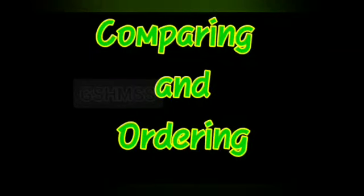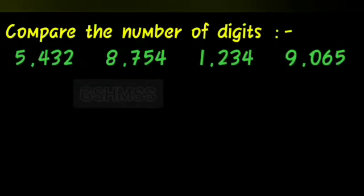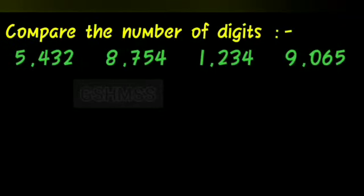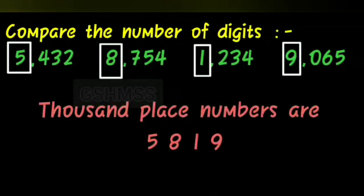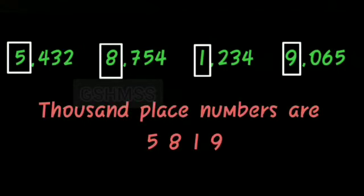Next, we are looking at comparing and ordering numbers. If you want to compare numbers, first we have to see the number of digits. All the numbers are four-digit numbers. So next we have to look at the thousands place. The thousands place digits are 5, 8, 1, and 9.